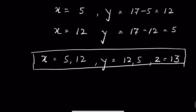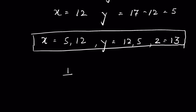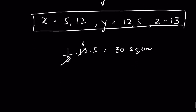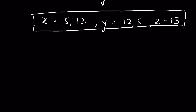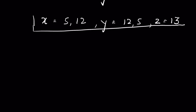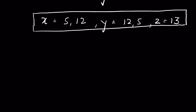So the sides are X equals 5 or 12, Y equals 12 or 5, and Z equals 13. We can verify: area is 1/2 times 12 times 5 equals 30 square centimeters, and perimeter is 5 plus 12 plus 13 equals 30 centimeters. Both cases check out — the answer is correct. Let me know how you solved it in the comment section. Thanks for watching!